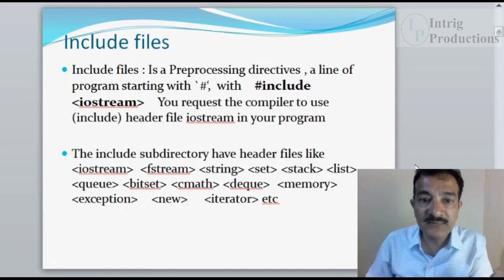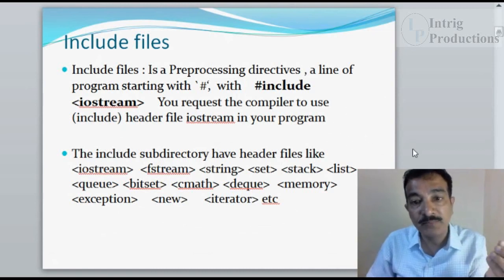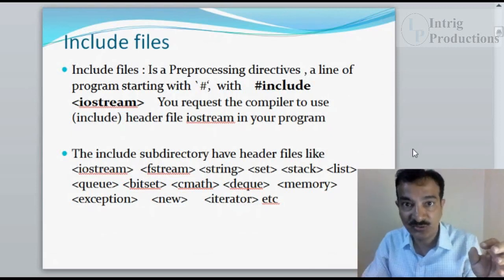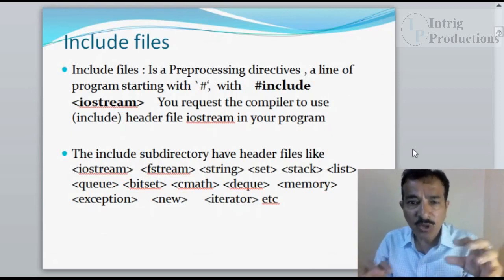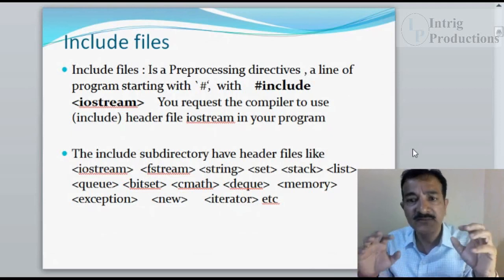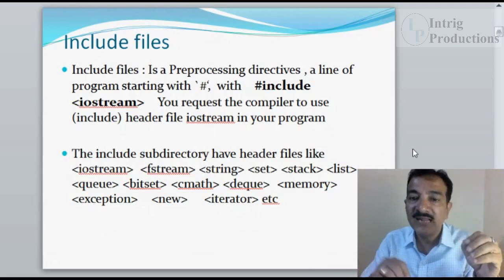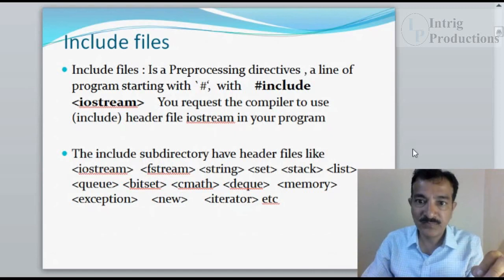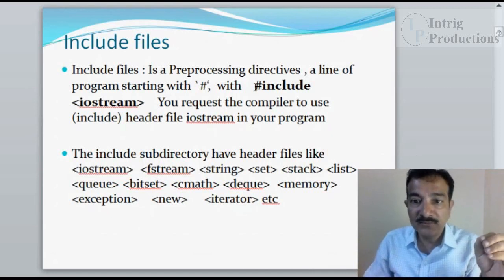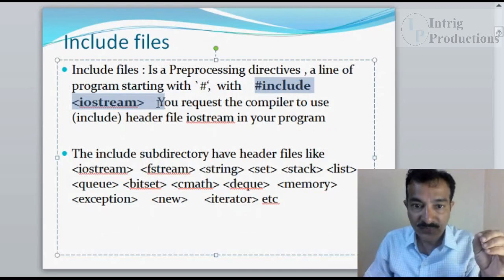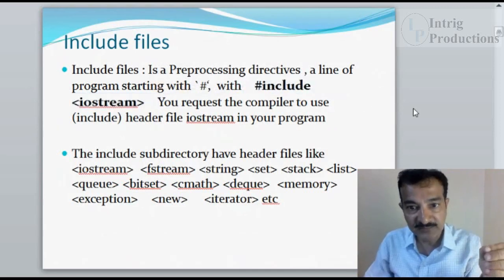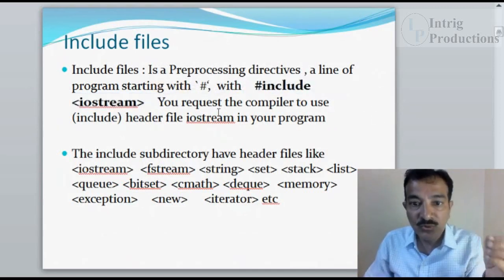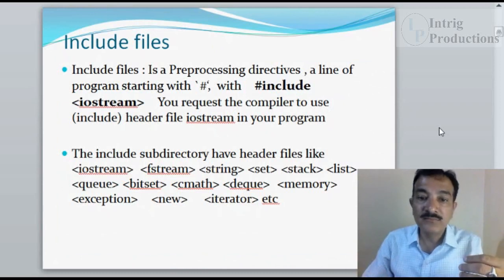To understand more clearly: the include file is a preprocessing directive — a line of a program which starts with a hash symbol. All preprocessing directives start with hash. So, hash include iostream is a command that requests the compiler to include the iostream header file in your program.